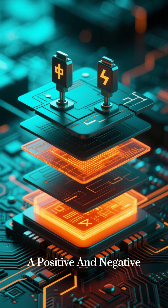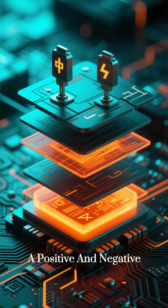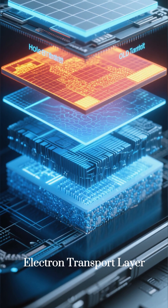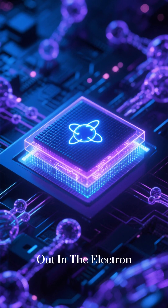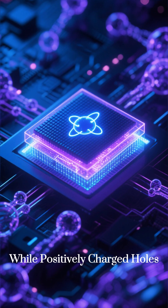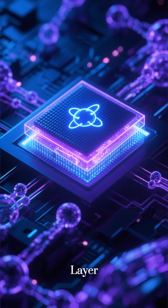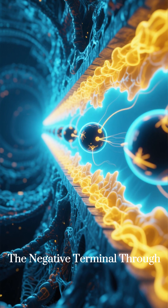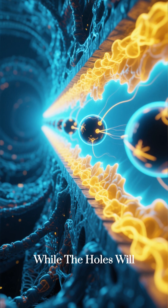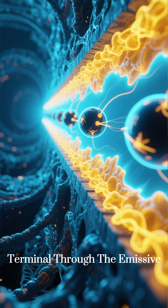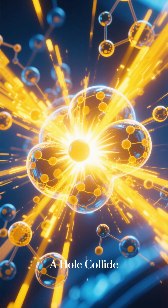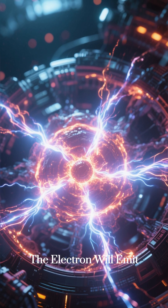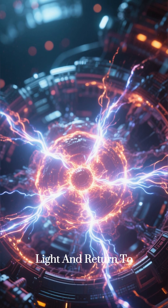In order to do that, we need to have a positive and negative terminal. This is where two other layers come in: we have a hole transport layer and an electron transport layer. Electrons like to hang out in the electron transport layer, while positively charged holes like to hang out in the hole transport layer. We can then apply power — electrons will flow from the negative terminal through the emissive layer, while the holes will flow from the positive terminal through the emissive layer. When an electron and a hole collide, they will recombine, and during that recombination, the electron will emit energy in the form of light and return to its original state.